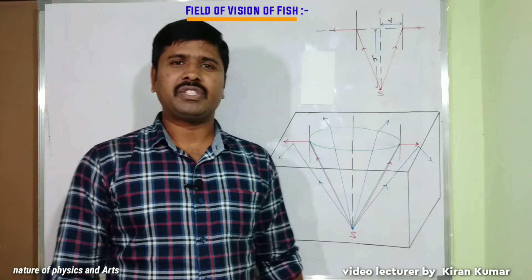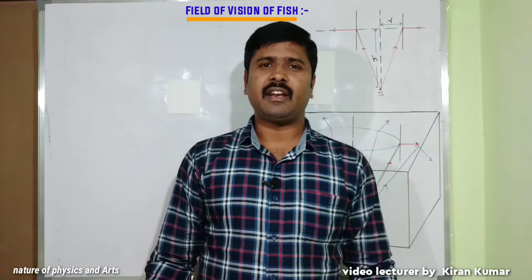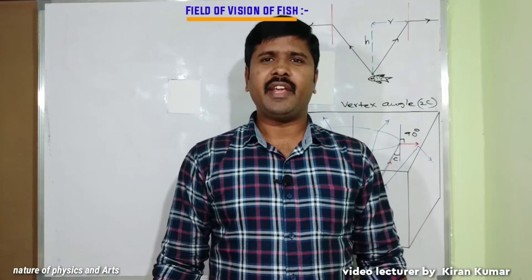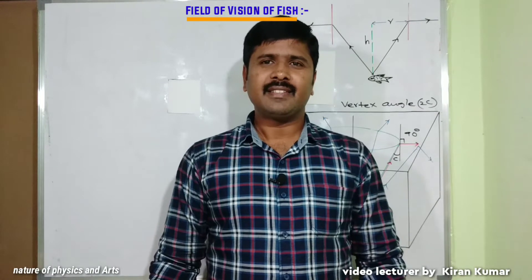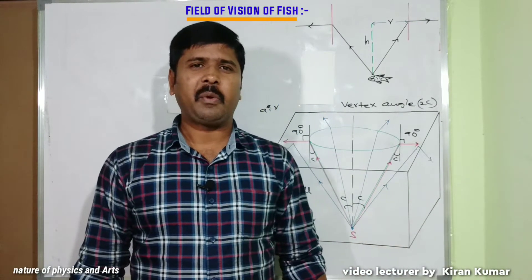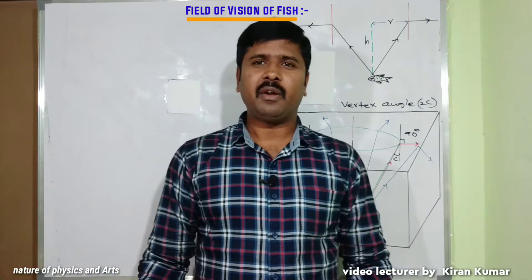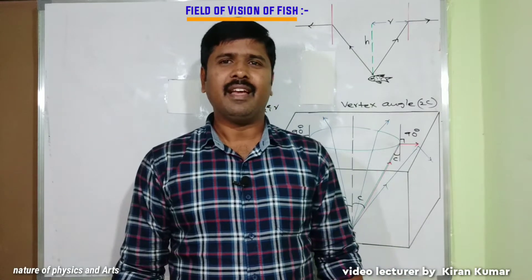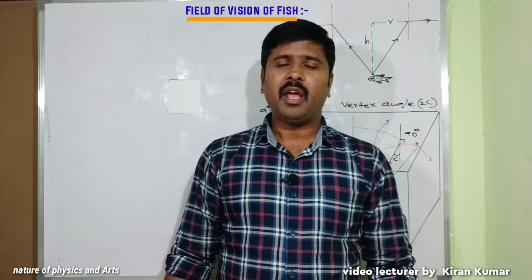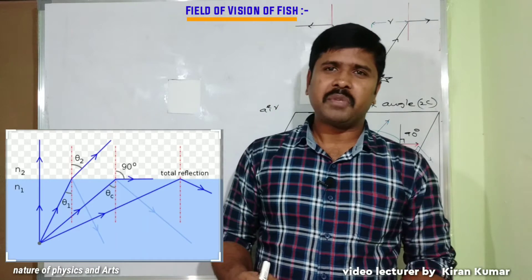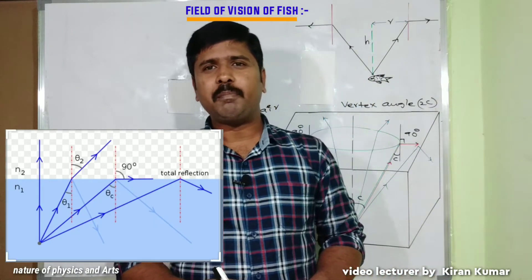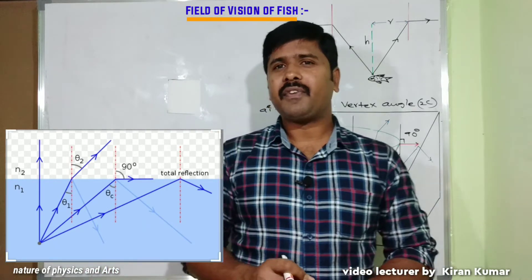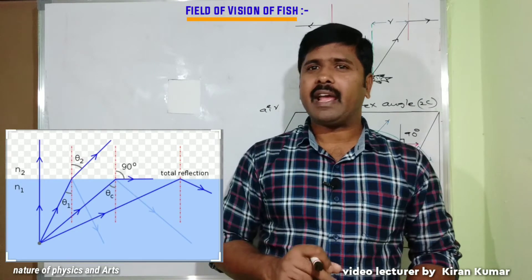Please watch the complete video so you can easily understand. A fish at a depth h in water can see the outer world through an inverted cone of radius r. The refractive index of water is mu, which equals 4/3. When light travels from a denser medium to a rarer medium, it bends away from the normal.